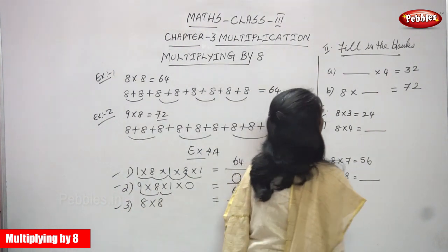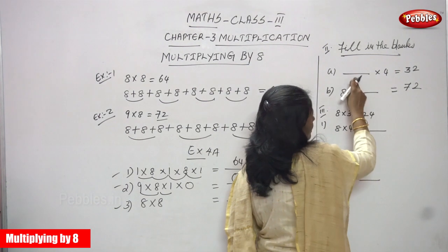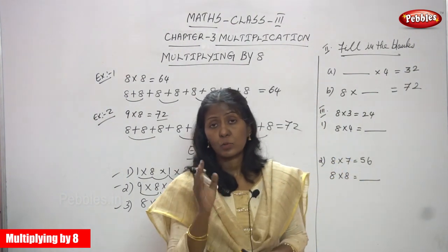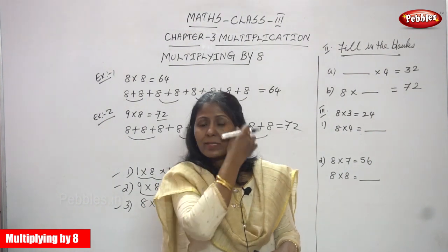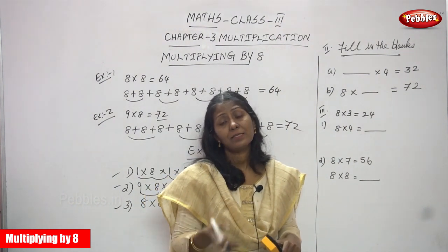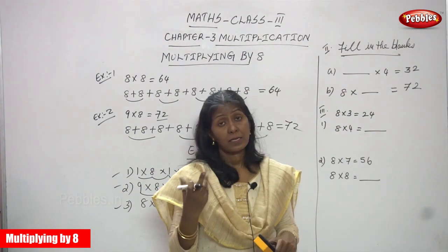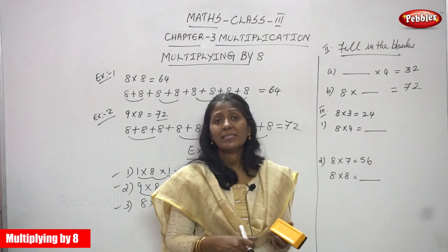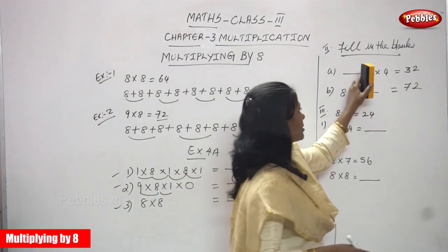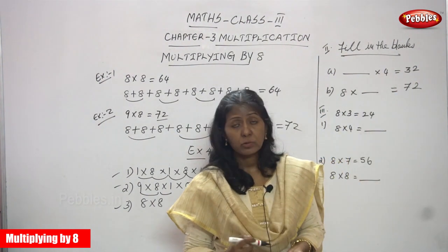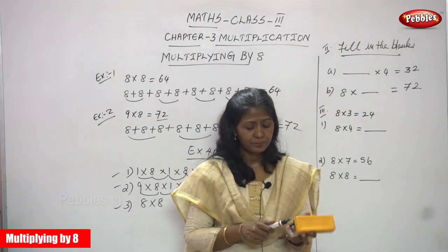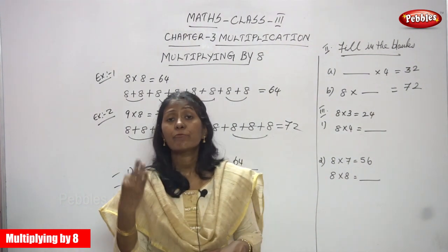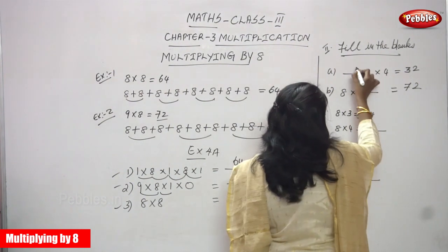Now we are going to do the fill in the blanks, Roman numeral II. Here the second number is 4 and the answer is 32. You must find the first number. You must say the 4th table up to 32: 4 ones are 4, 4 twos are 8, 4 threes are 12, 4 fours are 16, 4 fives are 20, 4 sixes are 24, 4 sevens are 28, 4 eights are 32. So 8 is the answer you have to write.